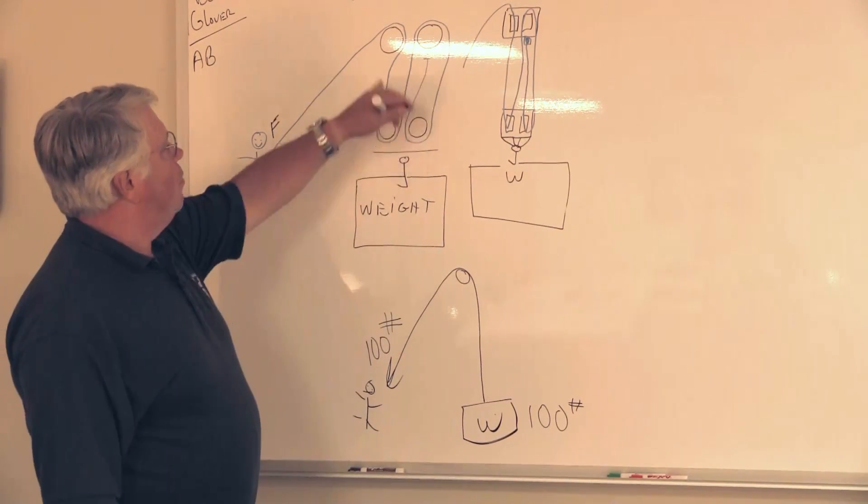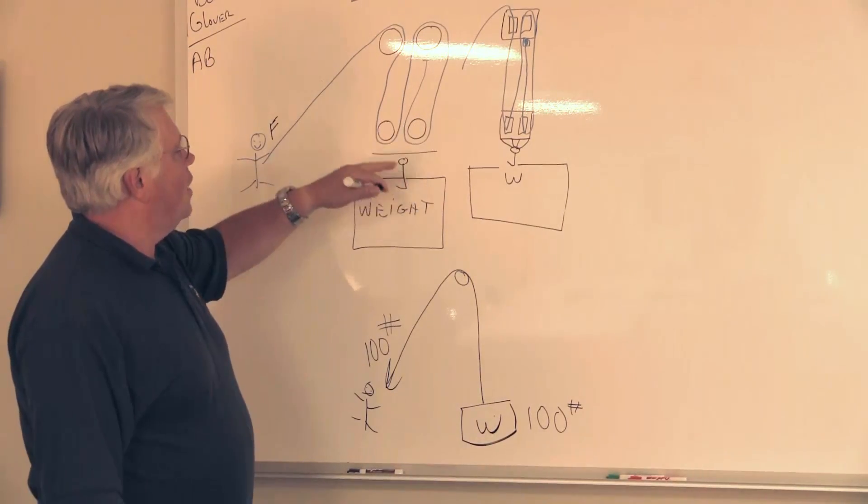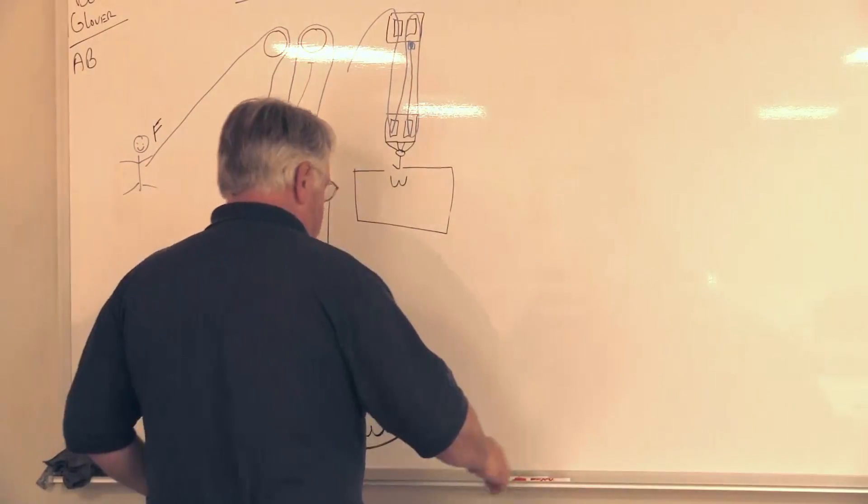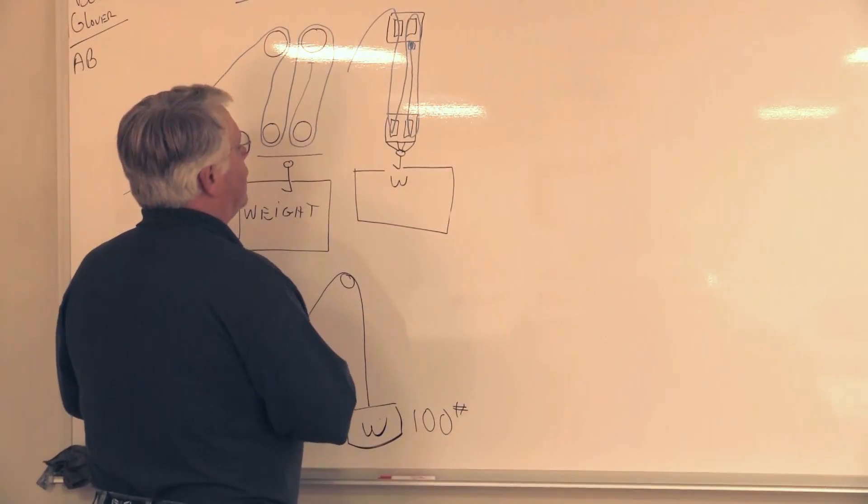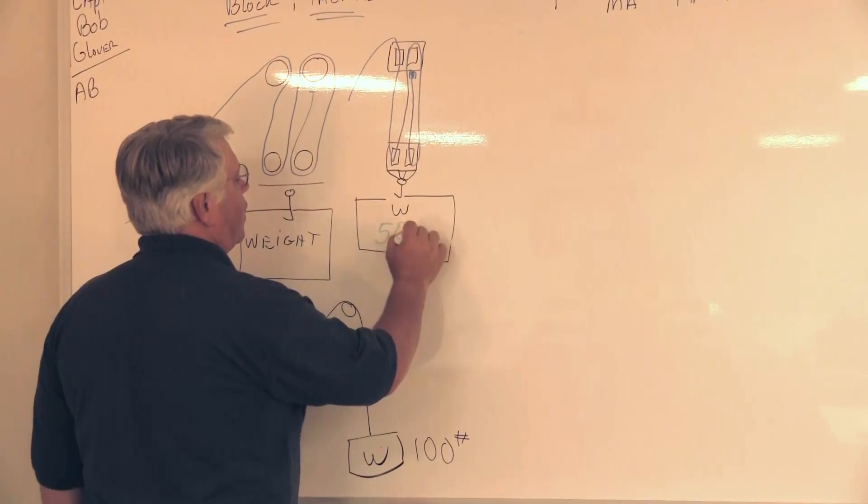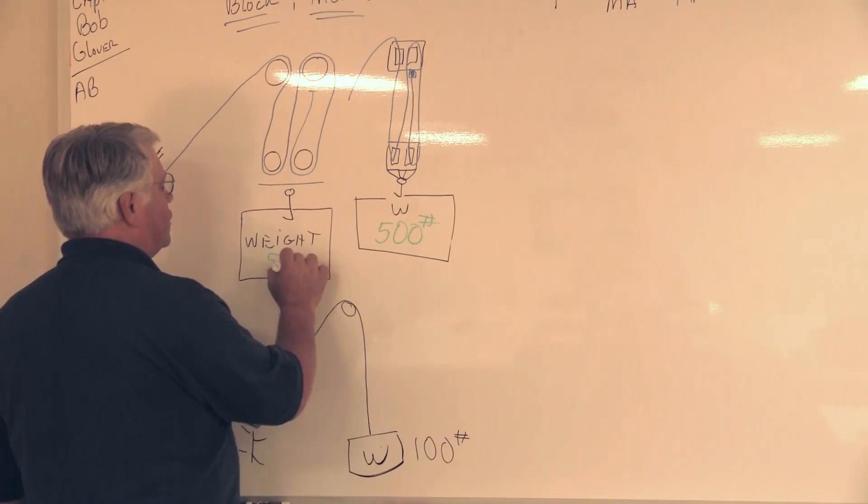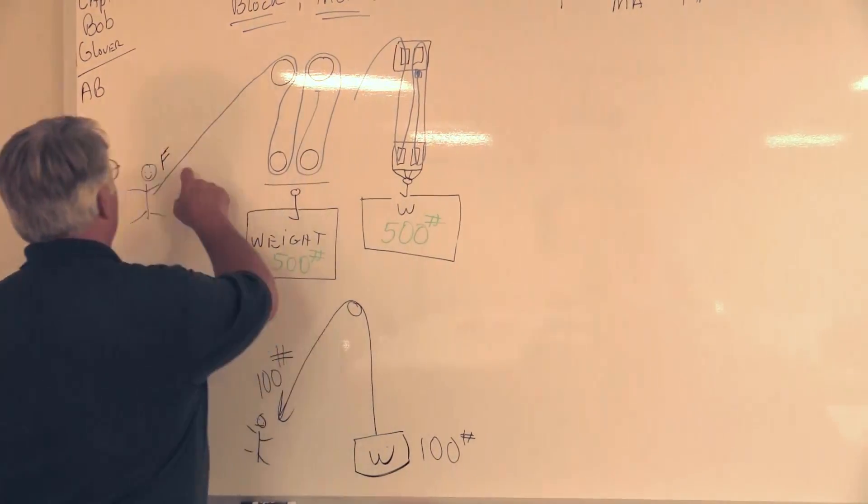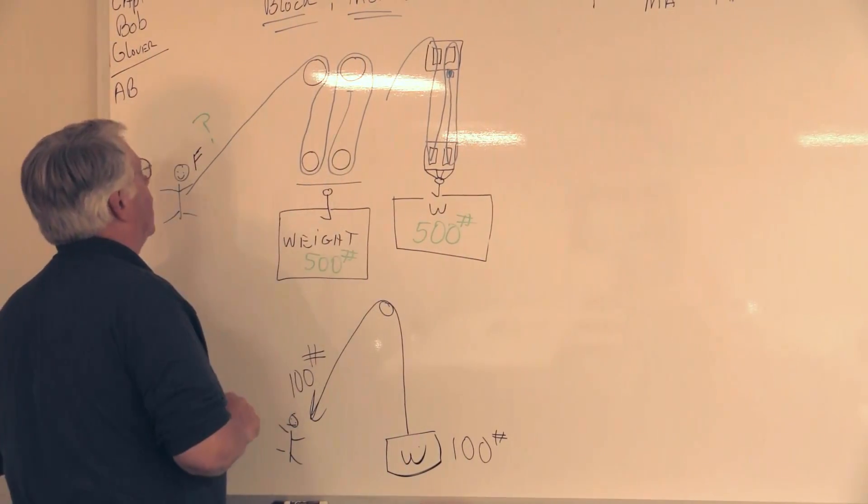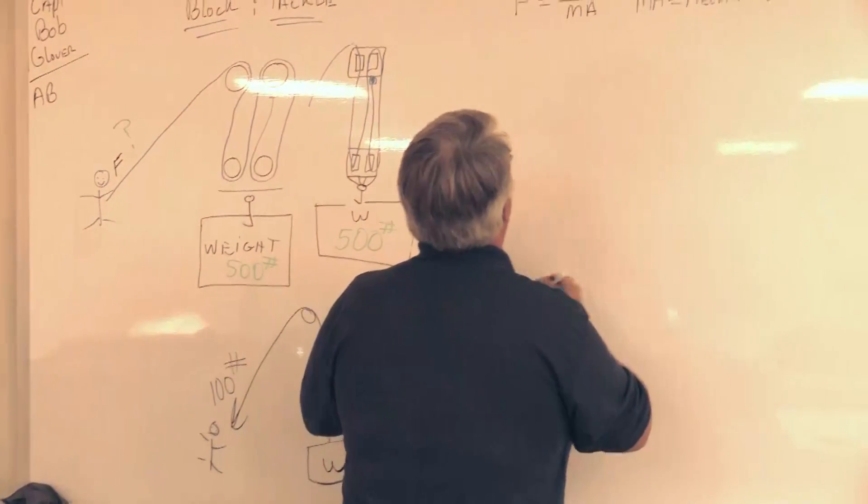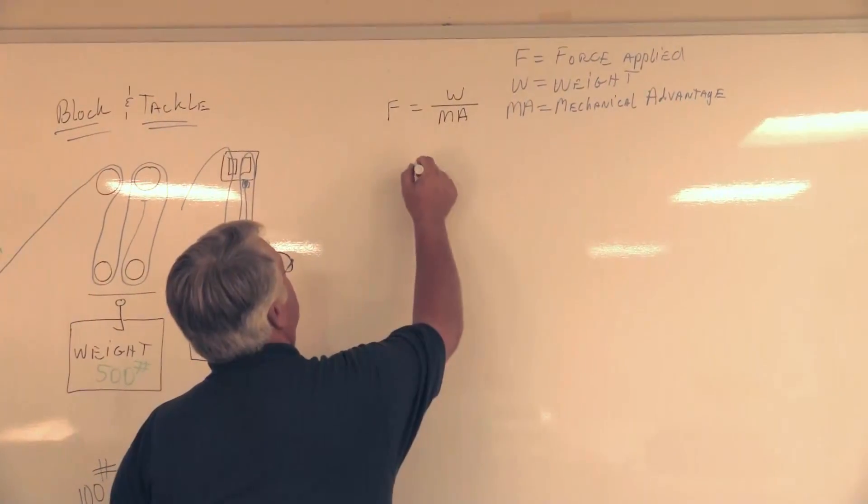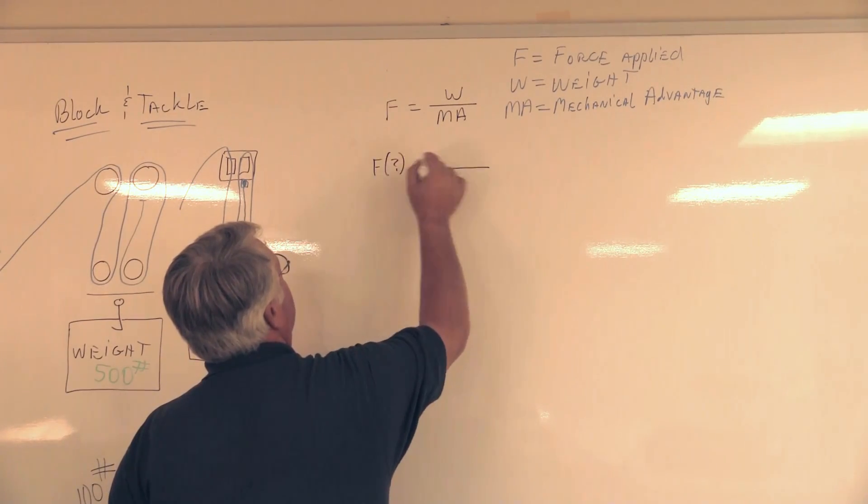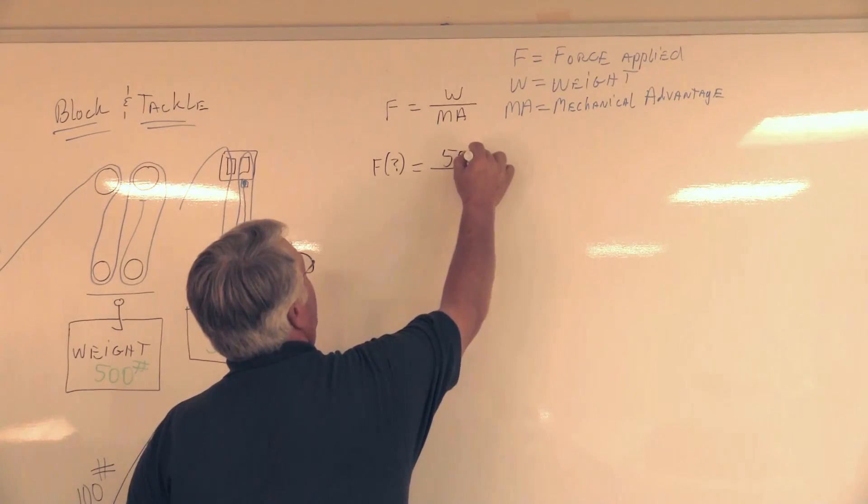By creating this multi-purchase system with a block and tackle, I don't have to pull as much. Let's throw in some numbers. We're going to say that this weight we're going to lift is 500 pounds. We are looking for what is that force. Let's go back to our formula and fill in what we know. We're looking for F, and we have the weight at 500 pounds.